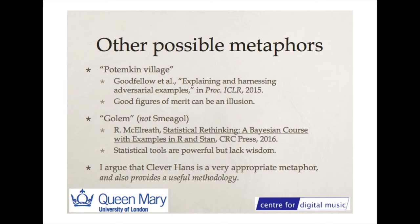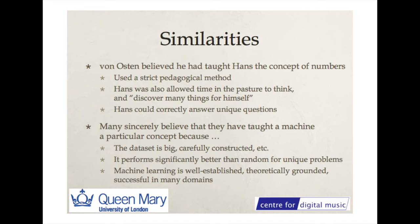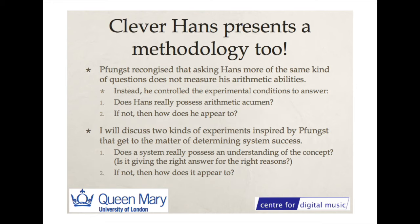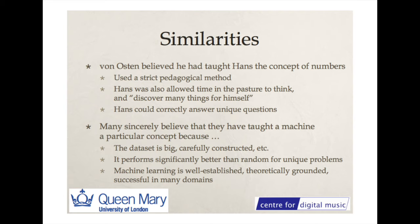Here are some similarities between Clever Hans and machine learning. Von Osten believed he had taught Hans the concept of numbers, using a strict pedagogical method. Hans was allowed time to think and discover concepts on his own — after a lecture on the numbers one, two, and three, Hans was eating grass and able to think about four, five, six, and so on. Hans could correctly answer unique questions from many people. In machine learning, many sincerely believe they have taught a machine a particular concept because the dataset is huge or carefully constructed with good provenance, the system performs significantly better than random on unique observations, holdout testing was used, and machine learning is theoretically grounded and successful in many applications.